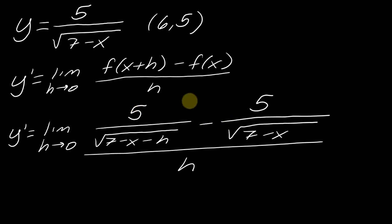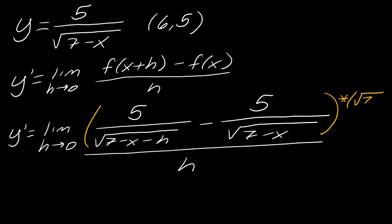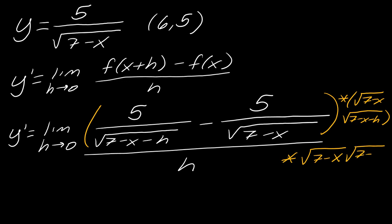Some people are fine with that level of detail, but it's more likely to make a mistake because it's just more stuff to write down. So if I think about what the common denominator is here — it's really this denominator and this denominator. So to clear out the denominators, I want to take this entire thing and multiply it by the square root of 7 minus x and the square root of 7 minus x minus h. I want to multiply this on the top, but whatever I do to the top I have to do the same thing to the bottom.